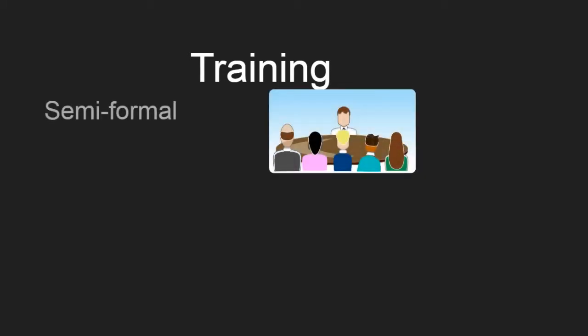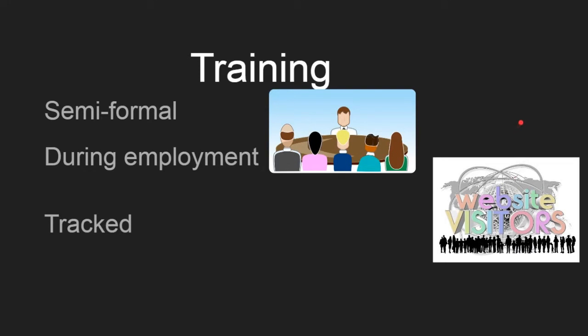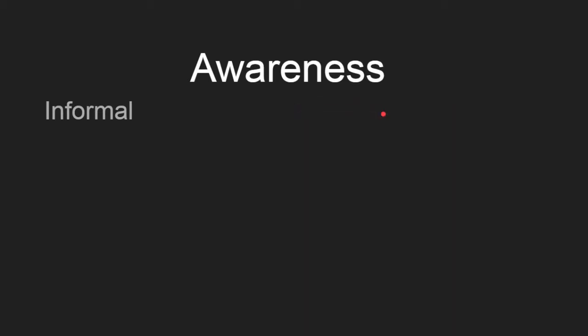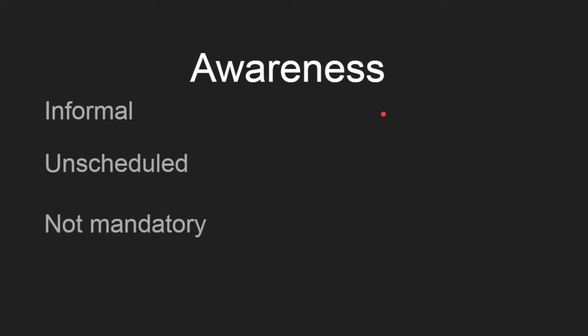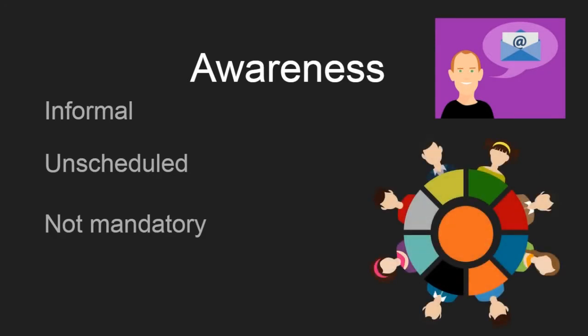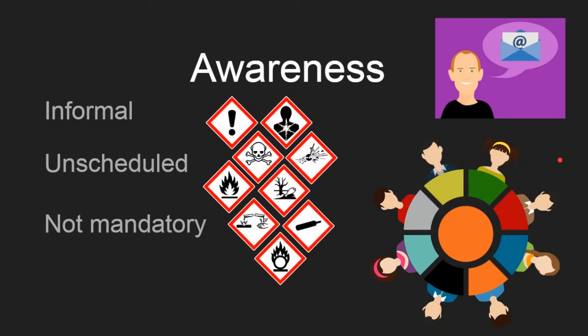Training — what's the difference between training and education? Training is semi-formal and is usually provided by your employer during employment in meetings or similar settings. It's automatically tracked and required by some kind of law or regulation. Awareness is basically making employees aware of the requirements for security. It's less formal, unscheduled, and not mandatory, but good to do — things like emails, reminders, discussions in meetings, or posters around the office reminding people of security issues.